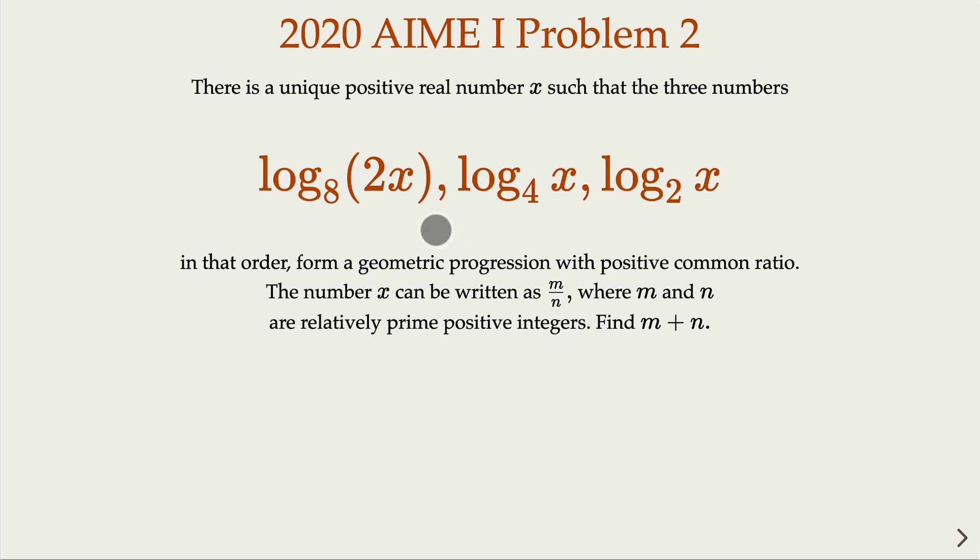The three numbers here form a geometric sequence. We try to find x, and in the typical AIME and AMC style, this is a fraction in the reduced form, and we try to find m plus n.